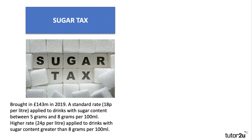Another example examiners love is the so-called sugar levy or sugar tax. Several countries including Mexico have introduced a sugar tax. In the UK it's a tax on high-sugar drinks, bringing in about £143 million in 2019 — compare that to VAT at £134 billion, very different scales. There's a standard rate of 18 pence per litre for drinks with sugar content between 5–8 grams, and a higher rate of 24 pence per litre for drinks with more sugar content.